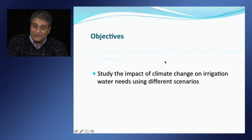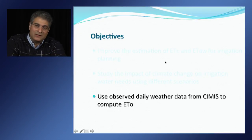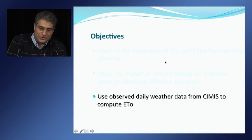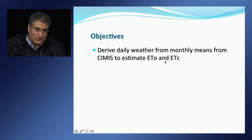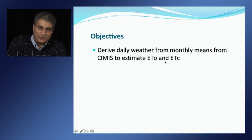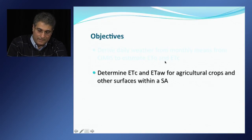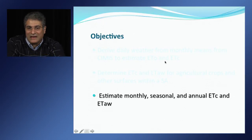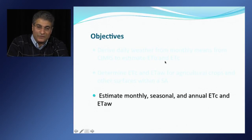To investigate how changes in weather will affect water demand by agricultural irrigation using different scenarios. To use daily data from CIMIS to compute daily reference evapotranspiration using the daily Penman-Monteith equation. To use a curve-fitting technique to derive daily weather data from monthly mean values to estimate daily reference evapotranspiration and crop evapotranspiration. To determine crop evapotranspiration and ET of applied water for agricultural crops and other surfaces, and to estimate monthly, seasonal, and annual crop evapotranspiration and ET of applied water within a study area or region.